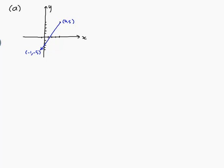The components are the x and y coordinates — this distance going across is the x coordinate, and this distance going downwards is the y coordinate. To find those, I just need to do terminal point minus initial point. So the components are terminal point minus initial point, which is: minus 1 minus 4 is minus 5, and minus 5 minus 5 is minus 10. Just to check — it goes down 10 and back 5. Excellent.